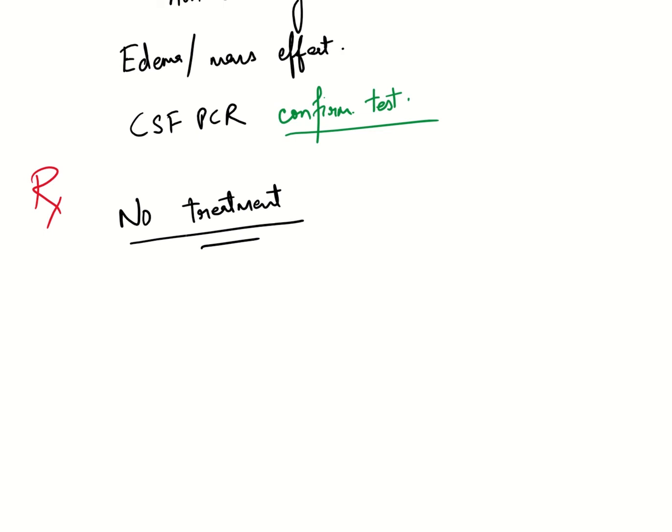However, in Harrison's it is given that if a patient who is on natalizumab is suspected of having PML, they should immediately be removed and that will give rise to an IRIS, but we will treat them with steroids. This has been given in Harrison's.